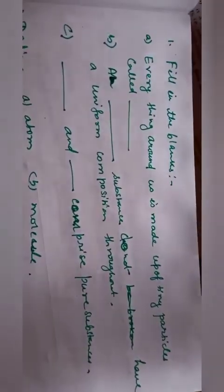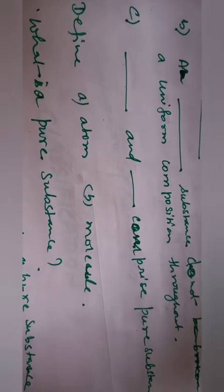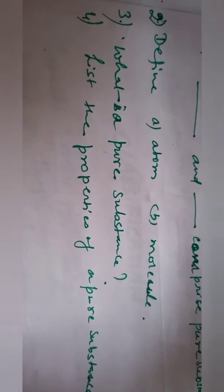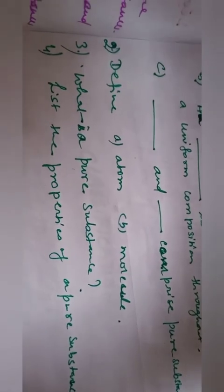For today's classwork, you will fill in the blanks: everything around us is made up of tiny particles called ___, impure substances do not have a uniform composition throughout, and ___ comprise pure substances. Then define: (a) an atom, (b) a molecule. Question three: what is a pure substance? List the properties of pure substances. For homework, read the topic discussed today and the key terms given on pages 32 and 33.